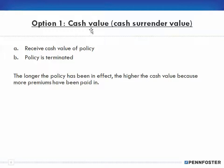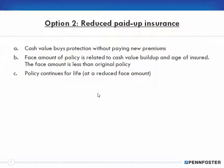Option one is the cash value — you receive the cash value of the policy and your policy is basically terminated. The longer the policy has been in effect, the higher the cash value, because more premiums have been paid in. That makes sense: you're paying in and paying in, building up cash value, and when you collect it, your policy is terminated.